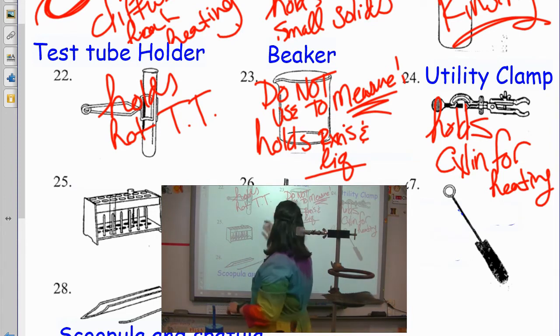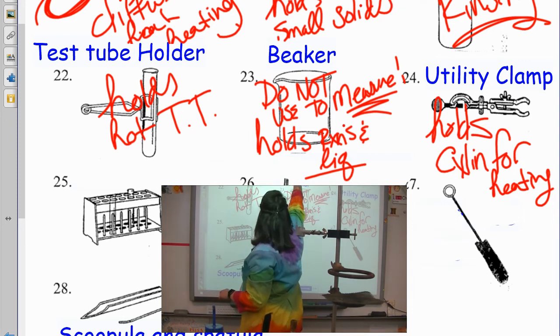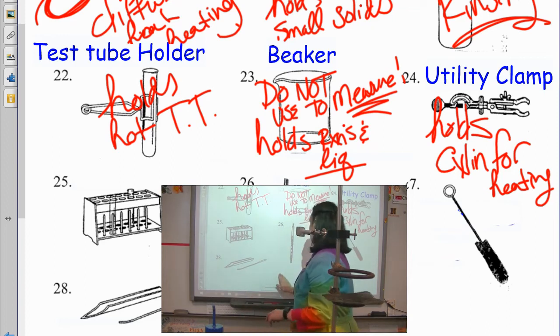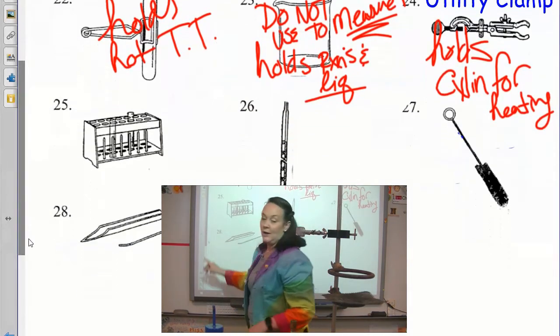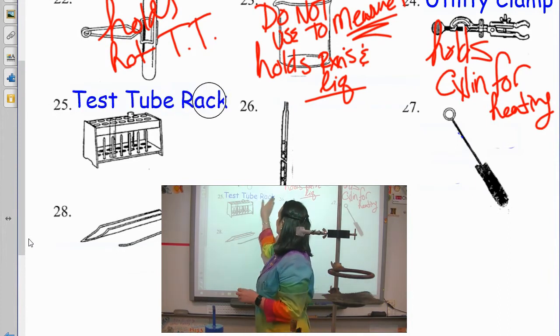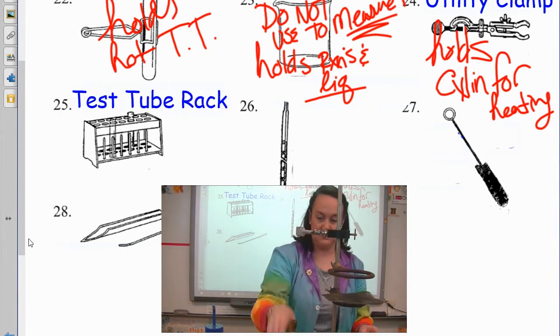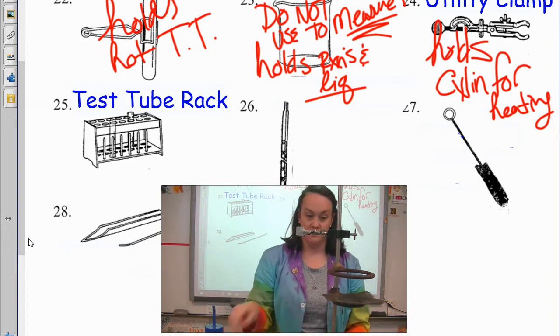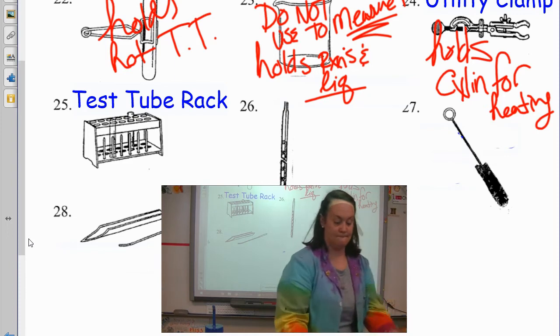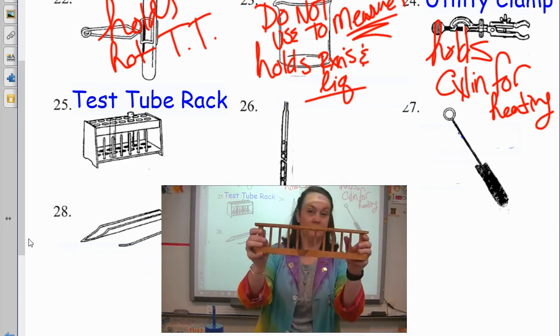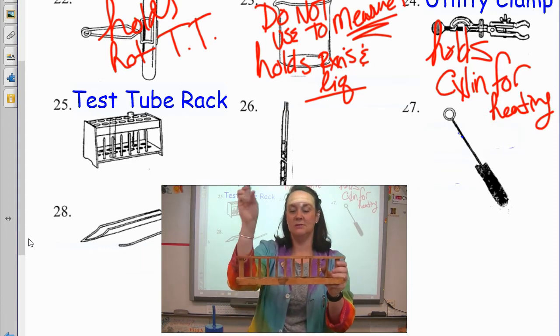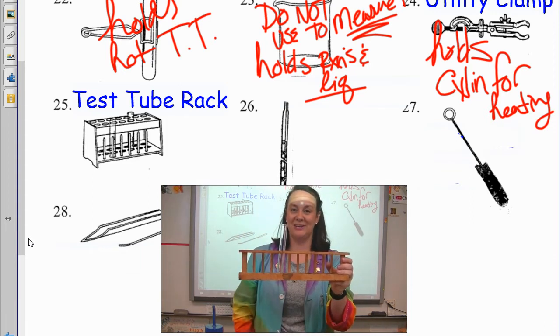All right, almost done here. Oh, I'm giving away answers. What the goodness. All right. Number 25. This is super simple. This is called a test tube rack. Test tube rack. Get this guy out of here. Very simply, test tube rack. There's a couple different versions that we have, but we have the nice long ones that fit nicely in our drawers. Holds test tubes.